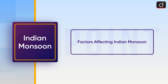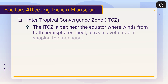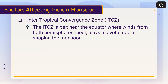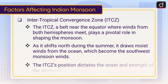Now, moving on to factors affecting the Indian monsoon. The Intertropical Convergence Zone, or ITCZ, is a belt near the equator where winds from both hemispheres meet, and it plays a pivotal role in shaping the monsoon. As it shifts north during the summer, it draws moist winds from the ocean, which become the southwest monsoon winds. The ITCZ position dictates the onset and strength of the monsoon rains.